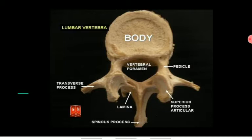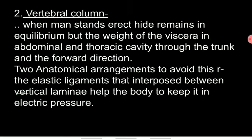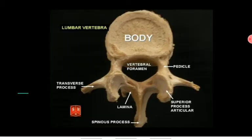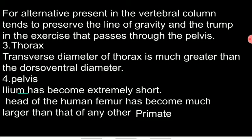In the vertebrae there are elastic ligaments so that the visceral organs can be managed. The vertebrae also have many projections which keep the center of gravity centralized, so that the weight falls in all directions and gravity is balanced, allowing the human being to maintain the vertical position.